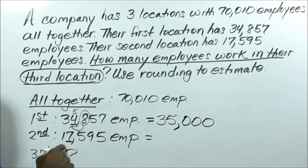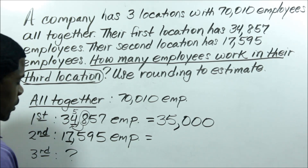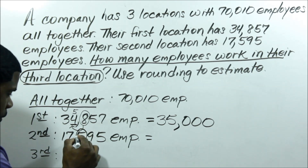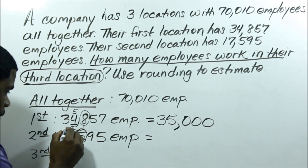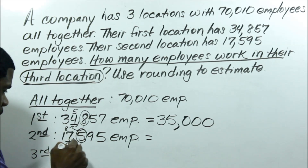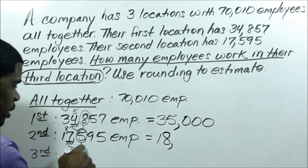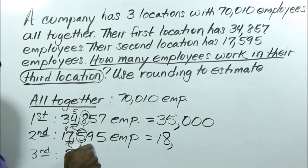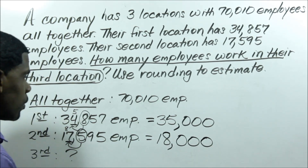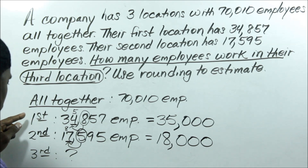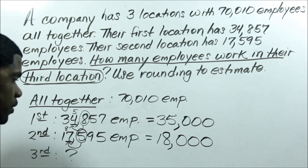Likewise, the second location has 17,595. Looking at the hundreds place — that digit is 5, which is five or more — so it rounds up one more, giving us 18. All smaller units become zero. So 17,595 rounds to 18,000.